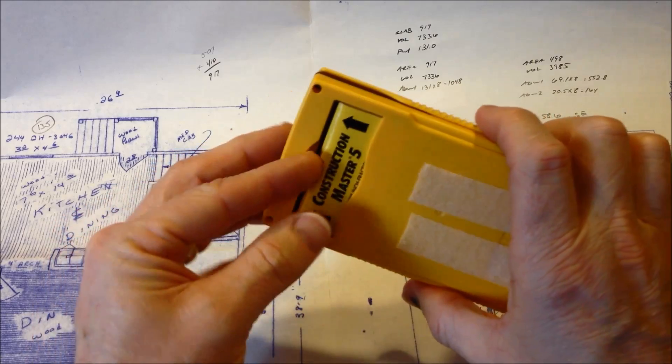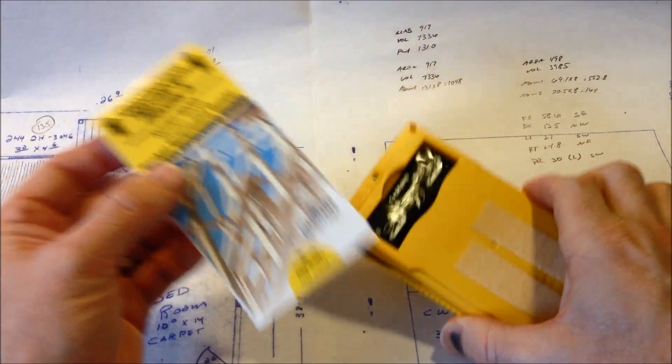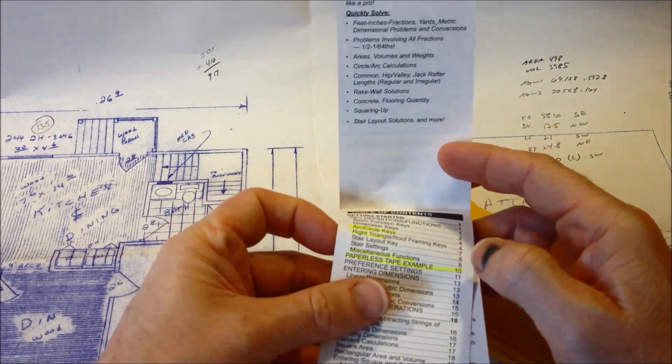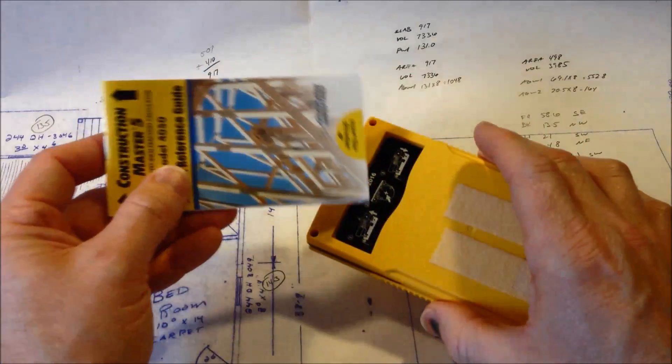The back of the calculator has a little pocket that the quick reference guide slips into. I have a few things highlighted in the manual, just for quick reference, that I use on a regular basis.